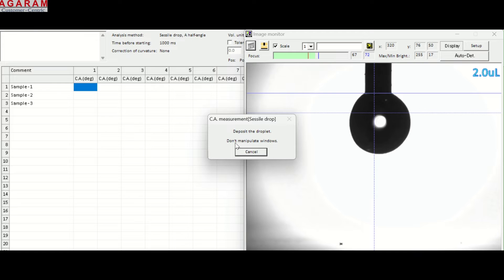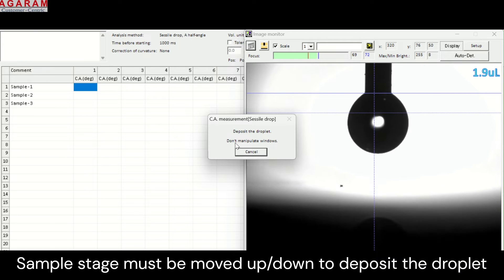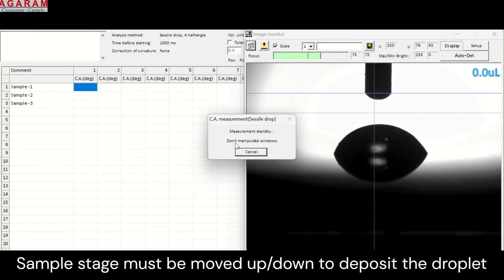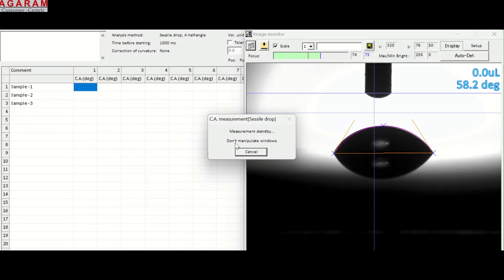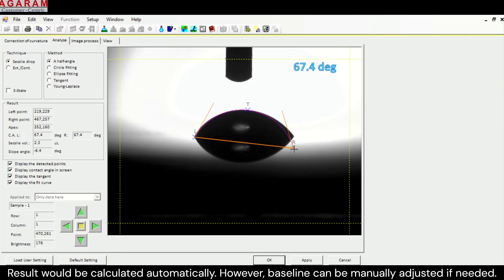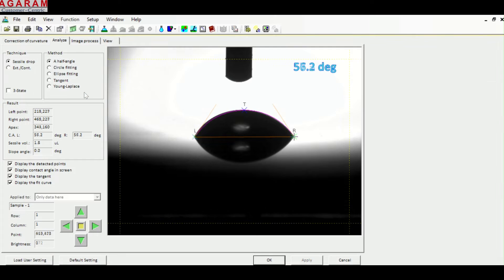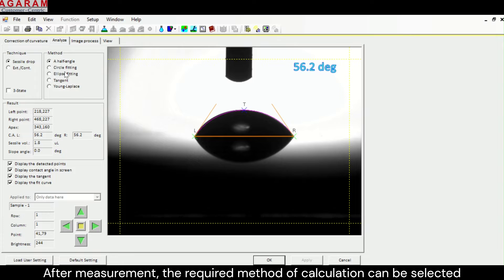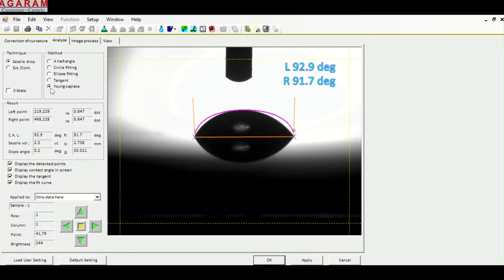Our software comes with advanced edge-detection technology that can measure even the superhydrophilic results. However, you also have an option to manually select the edges and baseline. You can choose your preferred calculation method after completion of the measurement. Various parameters and methods can be analyzed from a single measurement.